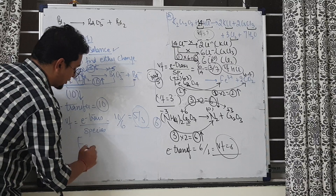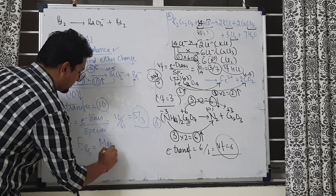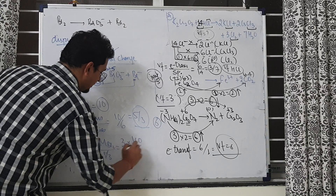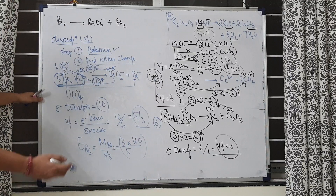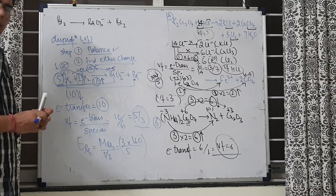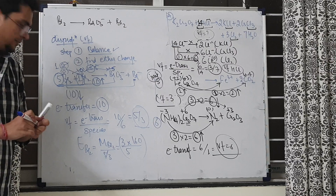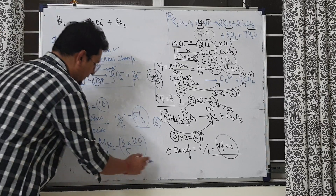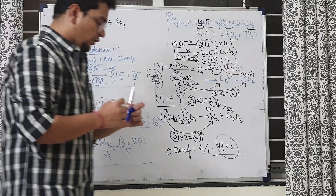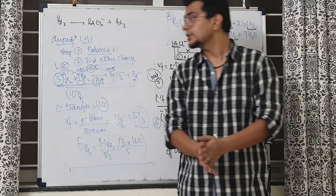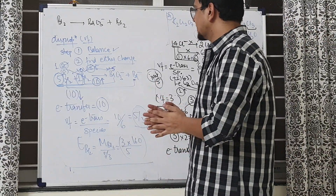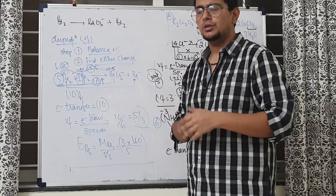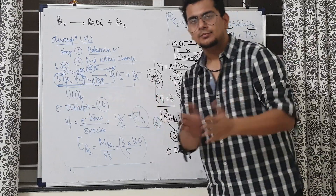Valency factor = electron transferred / total species = 10 / (5+1) = 10/6 = 5/3. If someone asks for the equivalent weight of Br₂: molar mass of Br₂ ≈ 160, divided by the valency factor 5/3 gives equivalent weight = 160 × 3/5 = 96. This concludes the valency factor topic. The next part of the video will cover the equivalent concept.